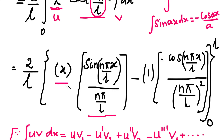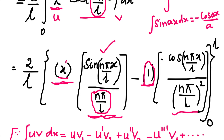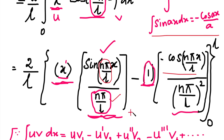The denominator is (n*pi/L)², which is n²*pi²/L². Since u' equals 1, and 1 is a constant, its derivative is 0, so we stop here. Now we apply the limits 0 to L. For the first term with sin: substituting x equals L gives sin(n*pi), which equals 0. Substituting x equals 0 also gives sin(0) equals 0. So the sine terms vanish.